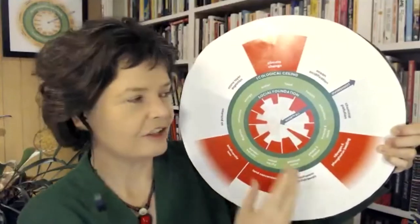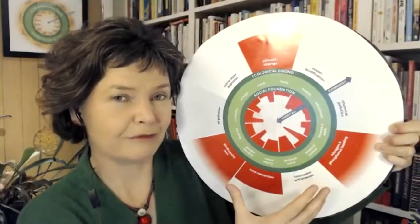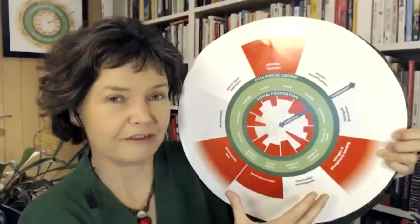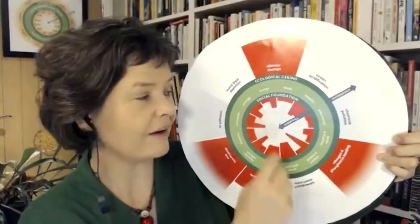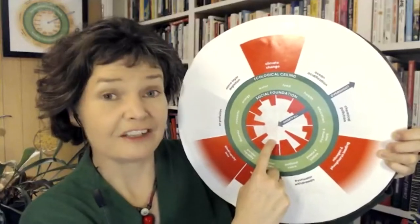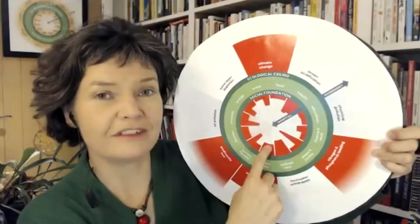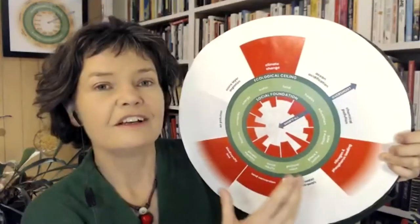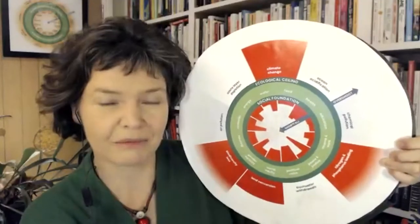We need to eliminate human deprivation and ecological degradation at the same time, and this hasn't been done before — it's barely been tried on a global scale. The 20th century was all about eliminating human deprivations, but the way a lot of that was done has leaked out into ecological overshoot. So we can't use old economic theories, old government policies, or old business models. We need new ones of our own times.